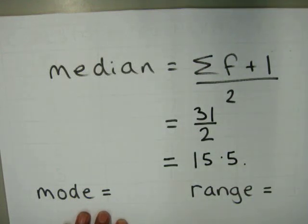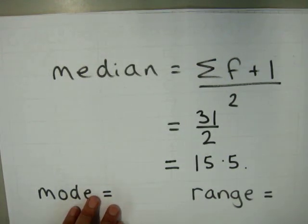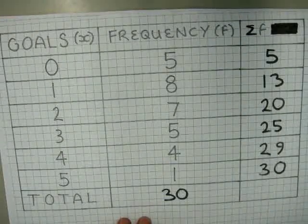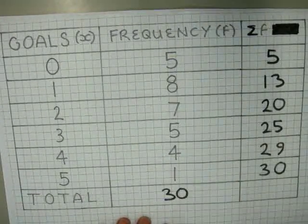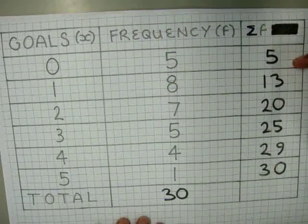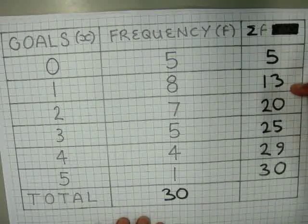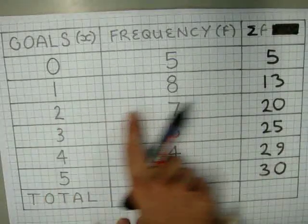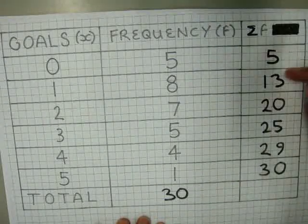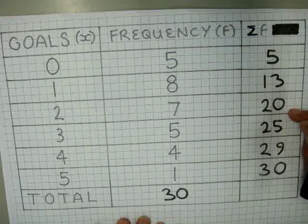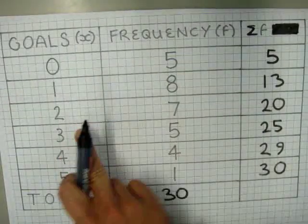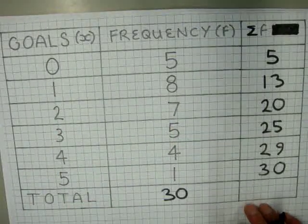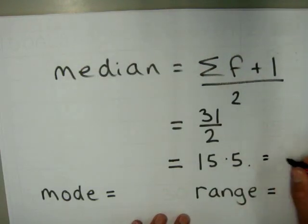15.5 is where the value is on our list, so we are looking for in between the 15th and 16th values — remember, this is because we have an even number in our list. For no goals there were 5 values; for one goal there were another 8, so we have 13 values. The 15th and 16th values will sit in the next row, because that takes us up to the 20th value. So our median number of goals is in that row — it's 2. It's not the frequency 7; we are looking at the goals. So the 15.5th value is 2 goals, and the median number of goals is 2.